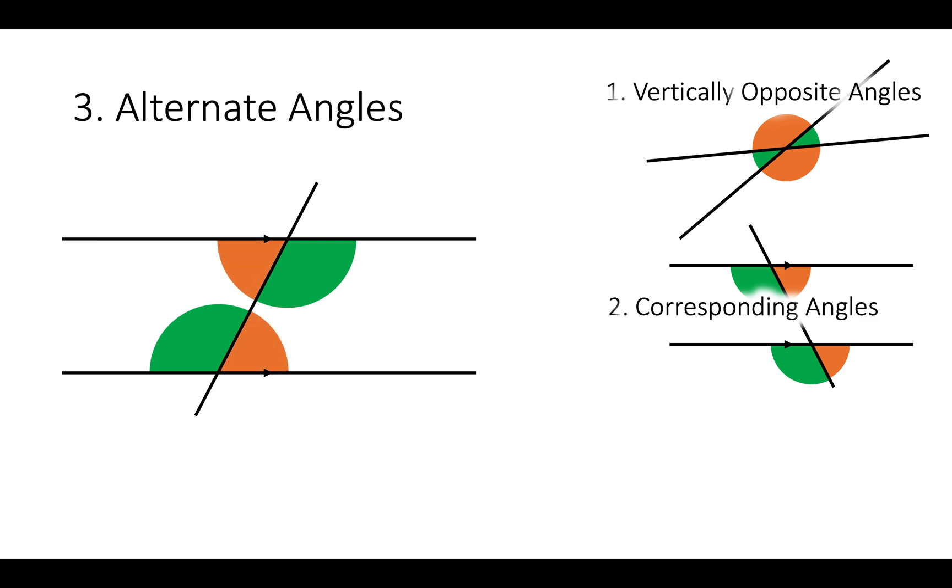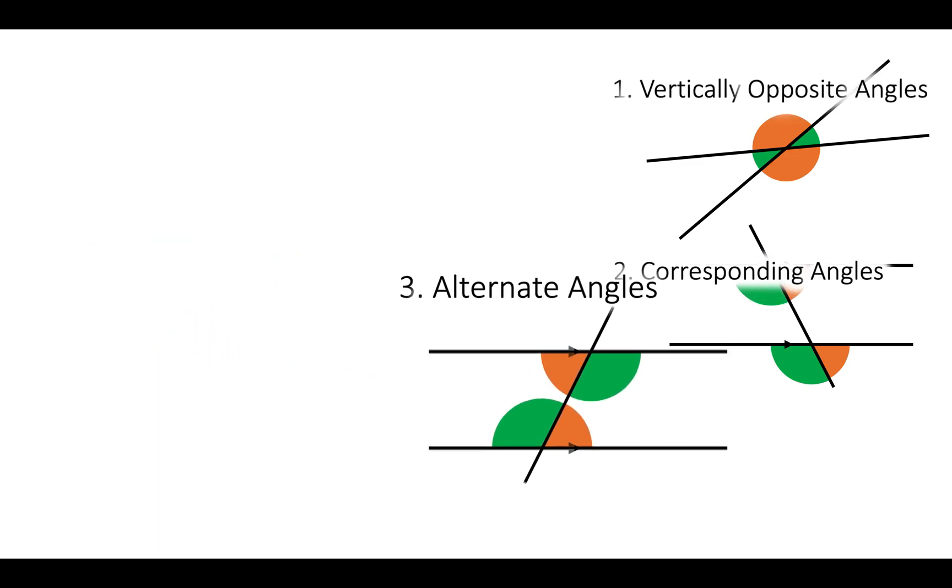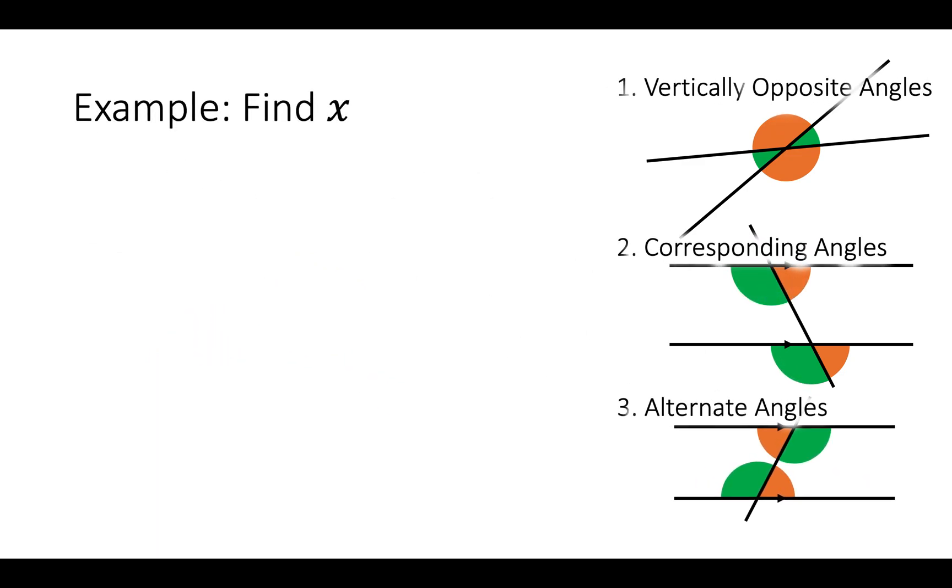Similarly, the orange angles are the same for the same reason. And people sometimes call this Z angles because it looks a little bit like a Z. So we have vertically opposite angles, corresponding angles, and alternate angles. So let's see how we can use this to find missing angles.